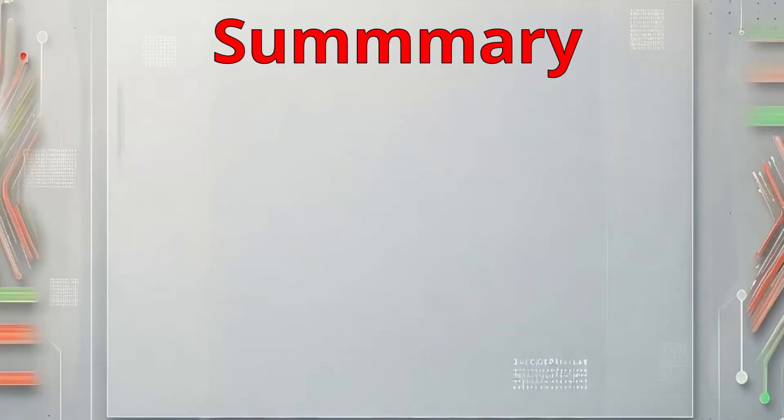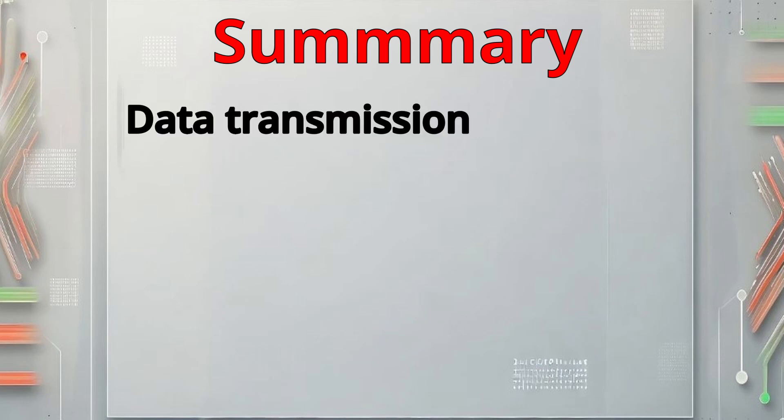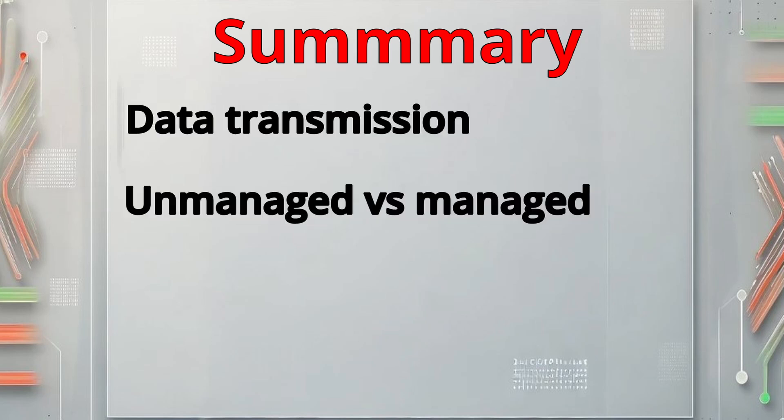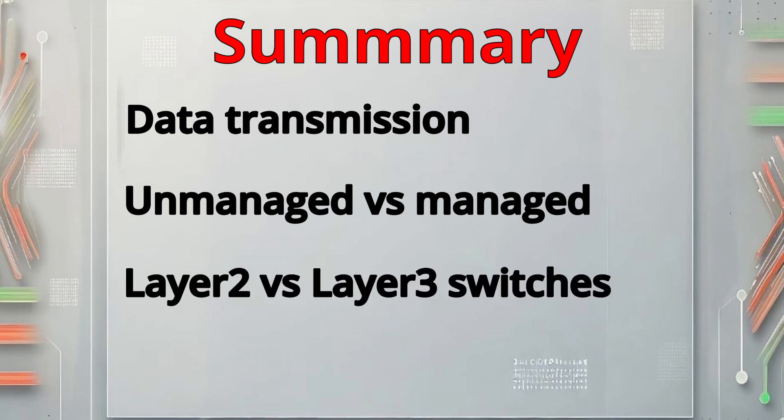That's it for this lesson. In this lesson, we discussed how data is sent to the right place, the difference between unmanaged and managed switches, and some functions of Layer 2 and Layer 3 switches. Finding the best combination of features can help you keep your network running so well that people using it won't even think about it.